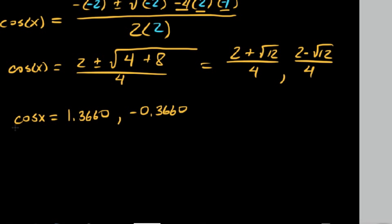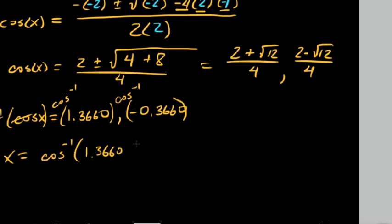So essentially, what we determined was that cosine of x equals 1.3660 and negative 0.3660. So in order to solve this, we're actually going to take cosine inverse of both sides of this equation. So that would cancel this out. And we get x equal, we have to do cosine inverse now of everything on the right, both of these. So cosine inverse of 1.3660 is one set of solutions, and then cosine inverse of negative 0.3660.